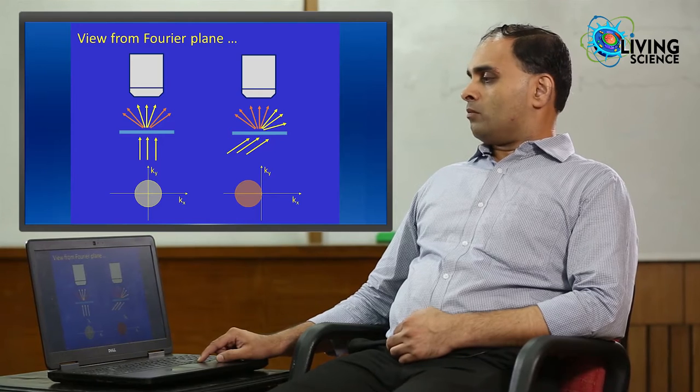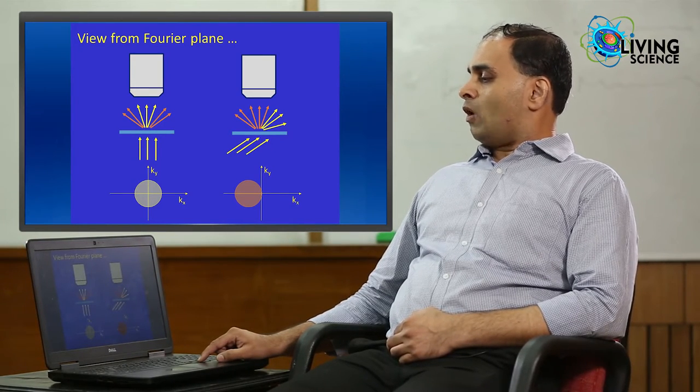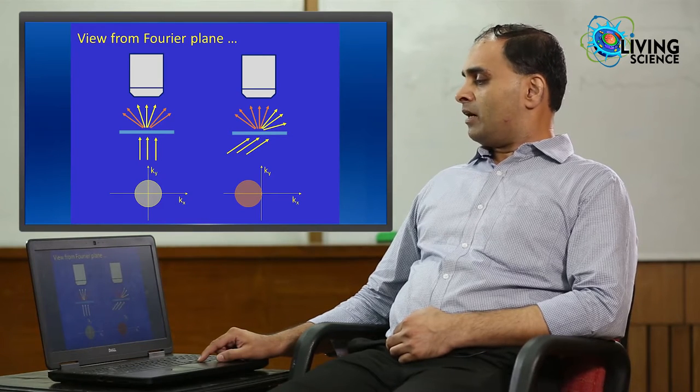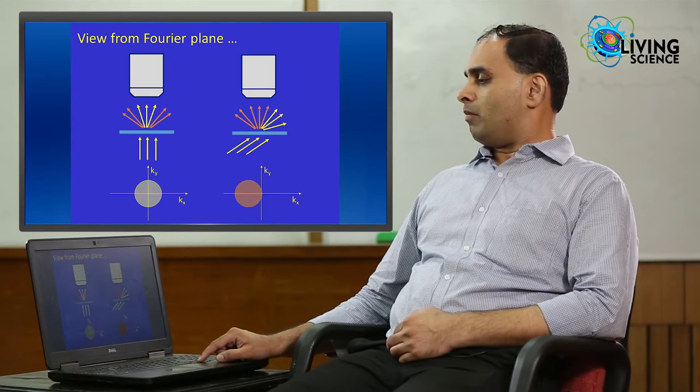If we look at this from the Fourier plane, we see that if we use normal illumination versus tilted illumination, a different region of Fourier space is accessible by the microscope.